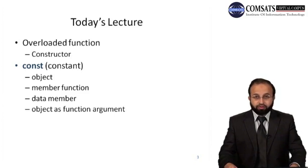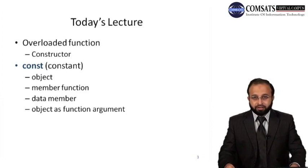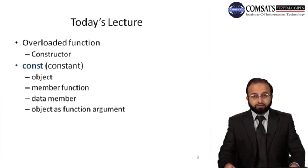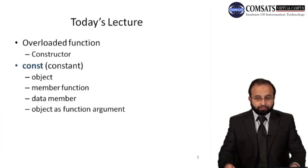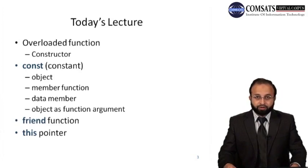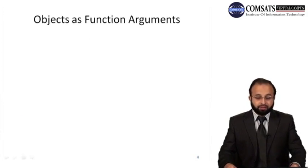So you can have a constant object, a constant member function within the class, a constant data member as a private data member of a class, and a constant object as a function argument. We will see each of these in detail with examples. Then we will see what a friend function is, and the very important concept of the this pointer, as well as objects as function arguments.